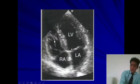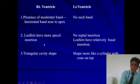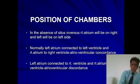In that case, the leaflet on the left side close to the septum will be closer to the apex. The moderator band is one identifying feature, and the leaflets having more apical insertion is another. These are the two main points by which we can differentiate the right from the left ventricle. Additionally, the right ventricle is much smaller and has a triangular cavity. This covers ventriculoatrial concordance and discordance.